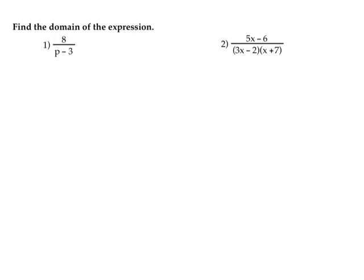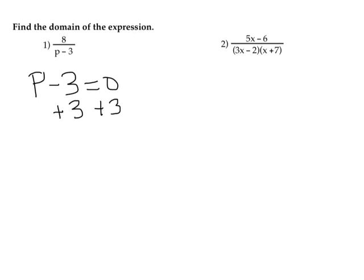Looking at the denominator is important for these kinds of expressions. We have the numerator on top and the denominator on bottom, so we're looking at p minus three. The problem is that you cannot divide by zero, so we set p minus three equal to zero and add three to both sides. At p equals three, the denominator equals zero, so p should not equal three.